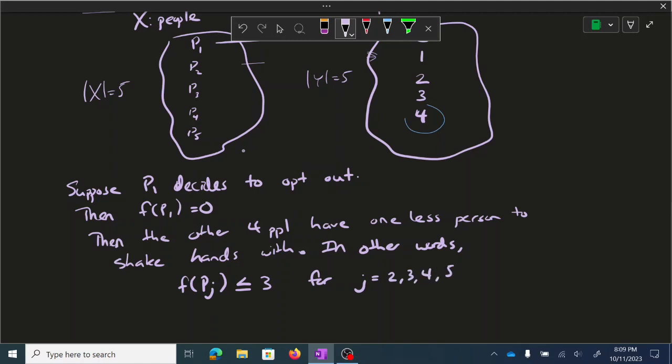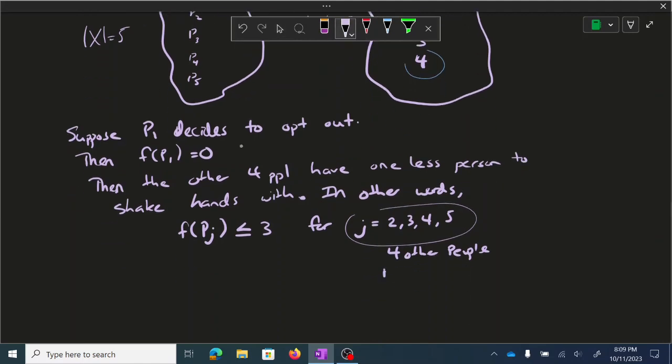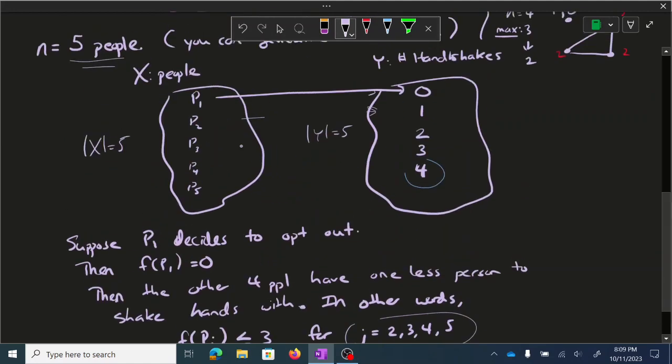All right, these are the four other people. All right, P1, or sorry, P2, P3, P4, P5. And I'm just saying that F of those people, if I try to map them out, it's not going to be possible. None of them can do that. That's a no-go because someone opted out. So there's one less person for them to shake hands with.